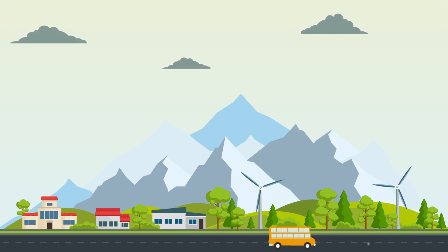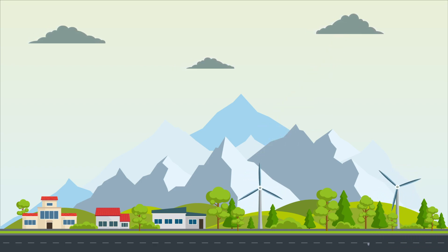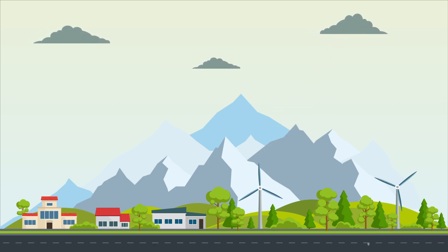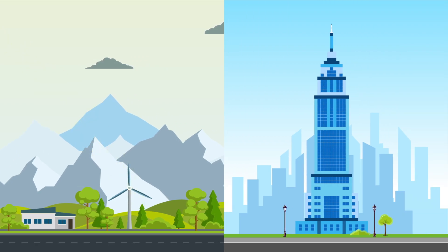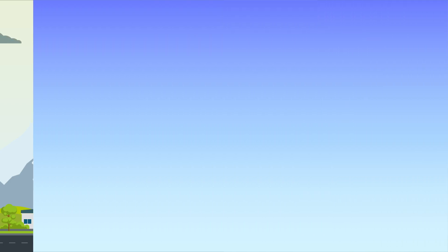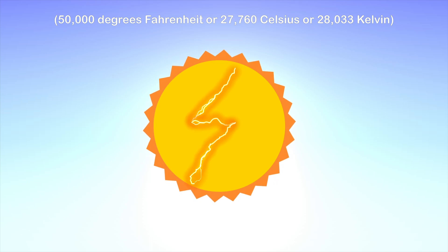Also, the famous saying that lightning never strikes twice in the same place is a myth, as the Empire State Building is struck on average 100 times a year. Lightning is extremely hot — a flash can heat the air around it to temperatures five times hotter than the sun. Because of this, lightning has some devastating effects.